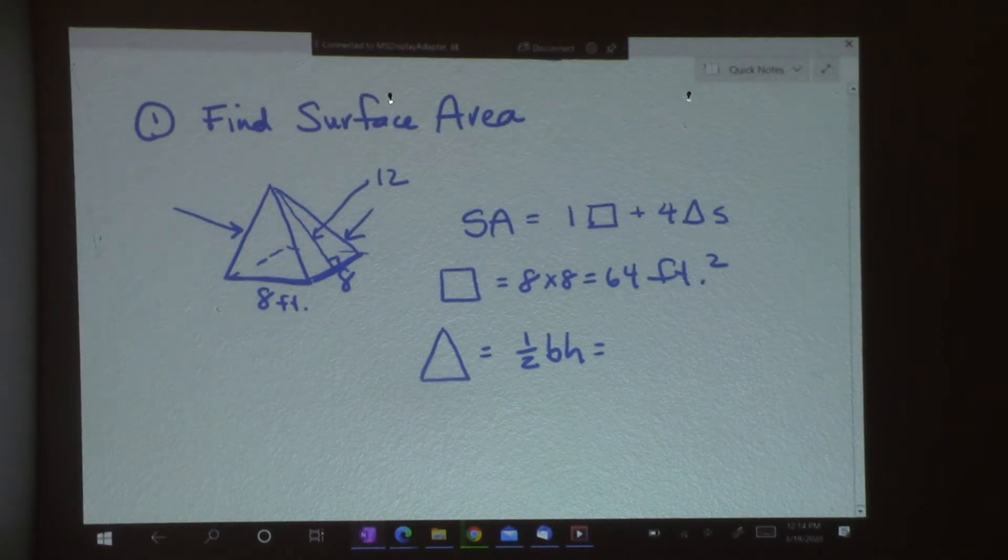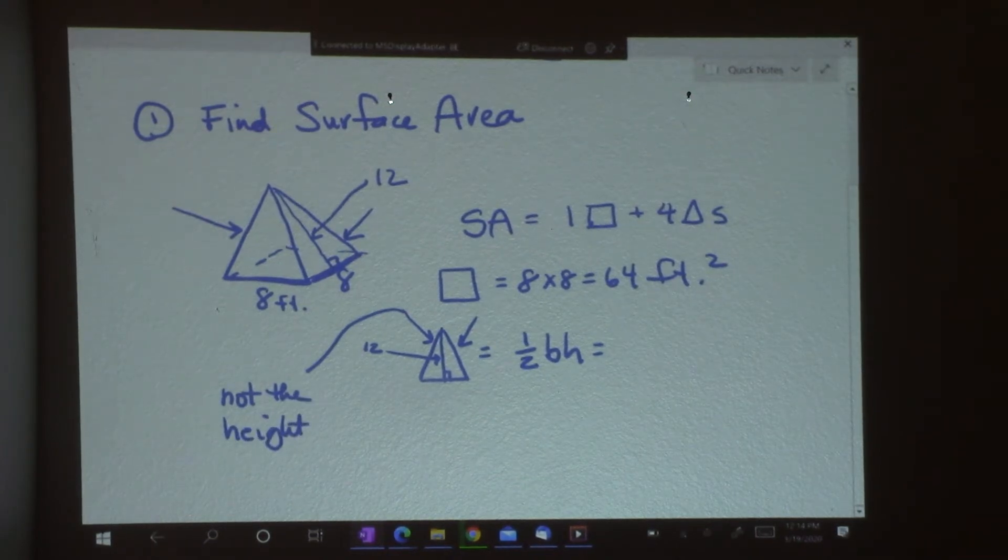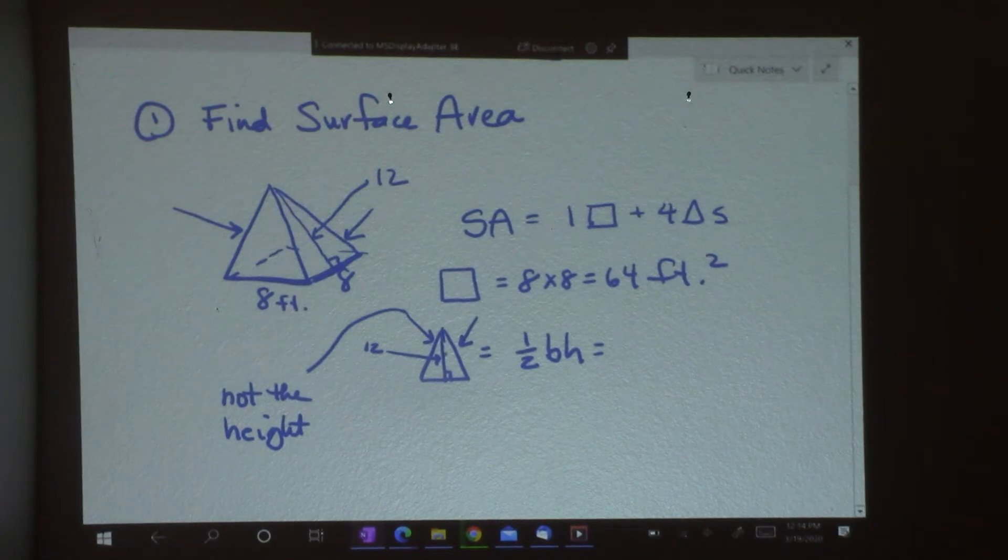In this example there's only one number given which is 12. The height goes down the middle of the triangle and it is perpendicular to the base. So it's not this. That is not the height. So let's write over here not the height. It's only the perpendicular length down the middle of the triangle. Very important. And this was 8. So I've got 1/2 and my base length is 8 and the height is 12. So half of 96 is 48.